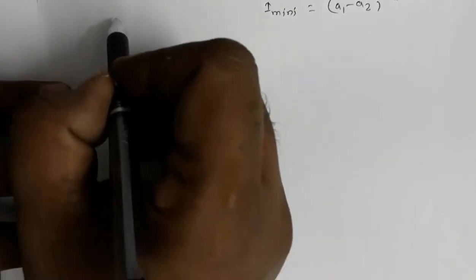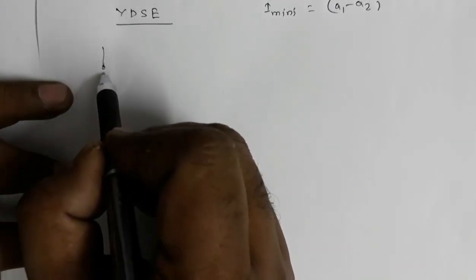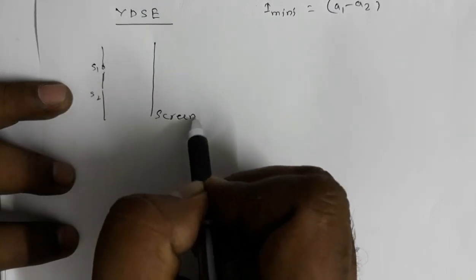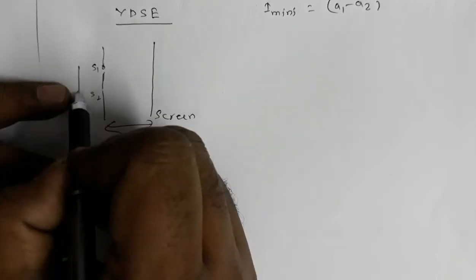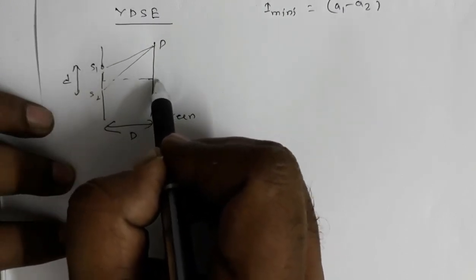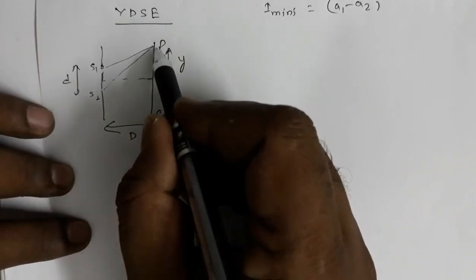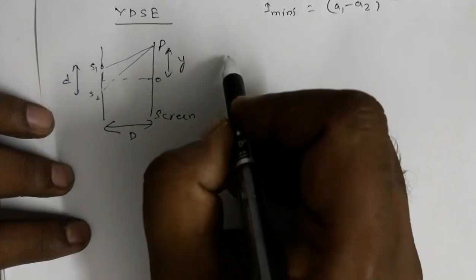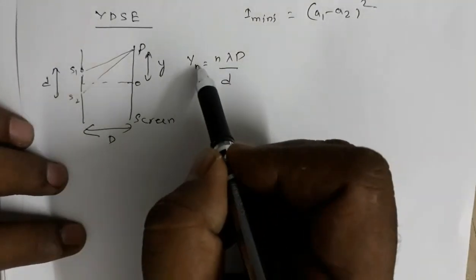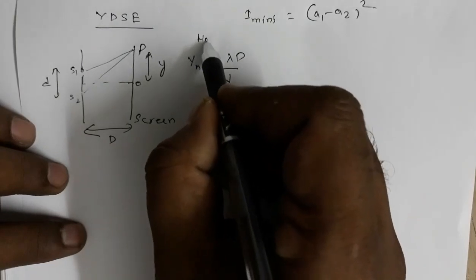Moving on to Young's double slit experiment (YDSE). The experimental arrangement has two slits S1 and S2, with the screen at distance capital D, the separation between the two slits is small d, and some point P on the screen is at distance y from the center. The distance of the nth bright fringe (maxima) from the center of the screen is: y_n = nλD/d, where n = 0, 1, 2, 3, and so on.